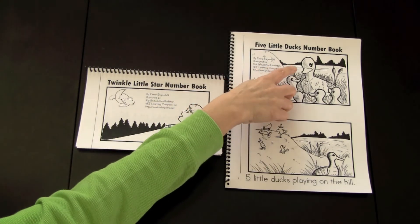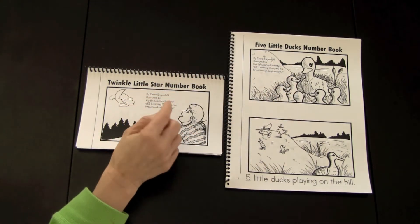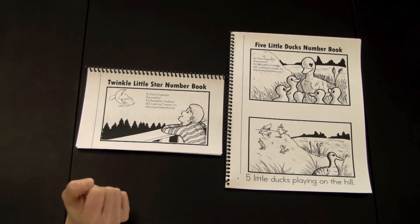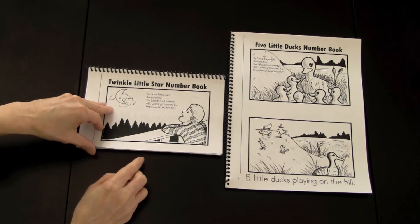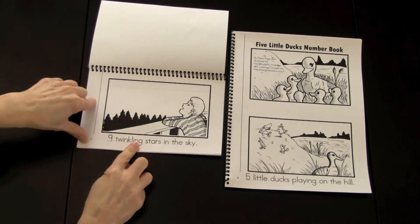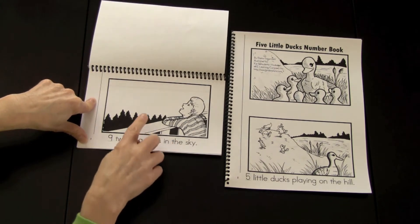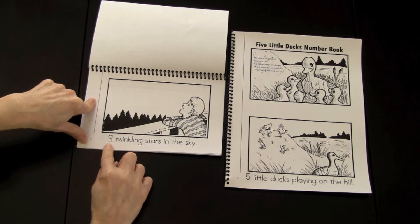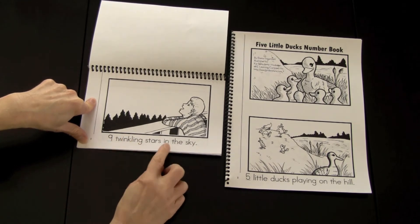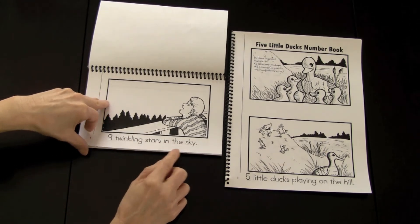The Readers Five Little Ducks Number Book and Twinkle Little Star Number Book both introduce the concept of subtraction. I'm going to demonstrate a few pages to you. Nine twinkling stars in the sky. The children would either place the sticky stars up there that represent the correct amount or they could draw them. And on each page there is one less.